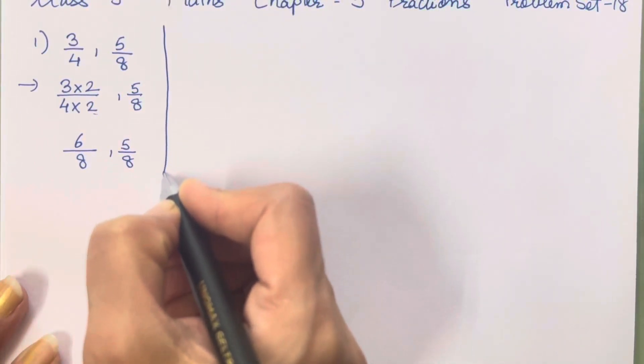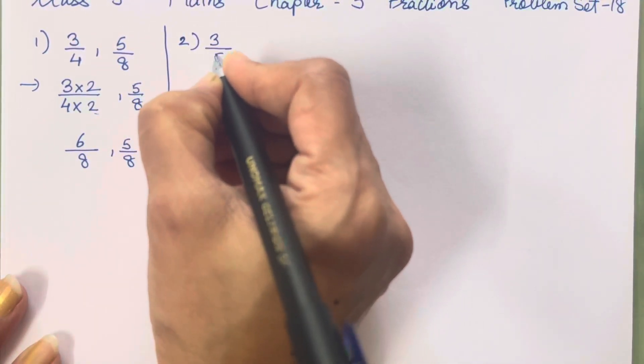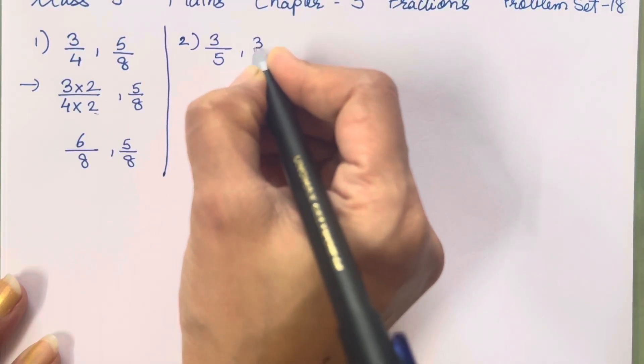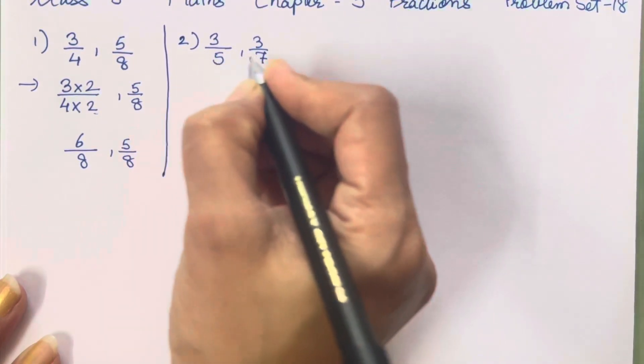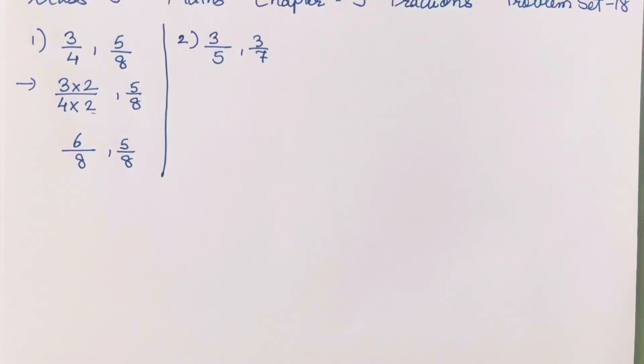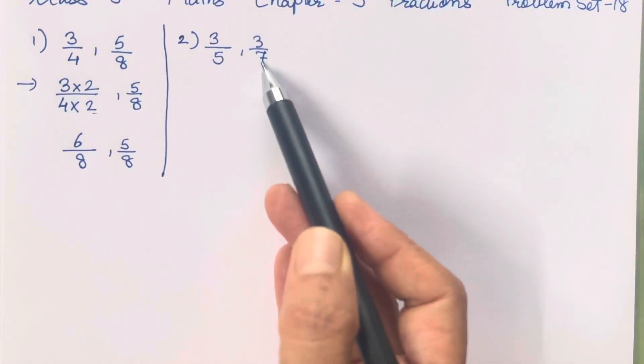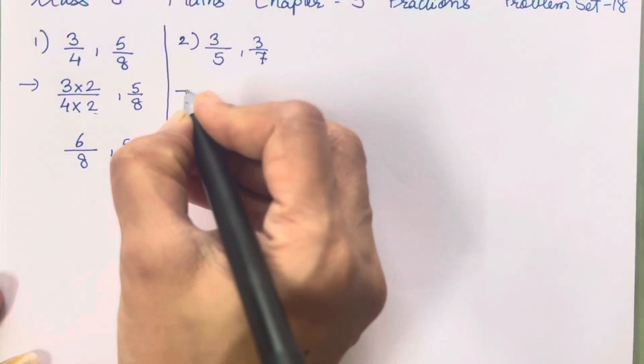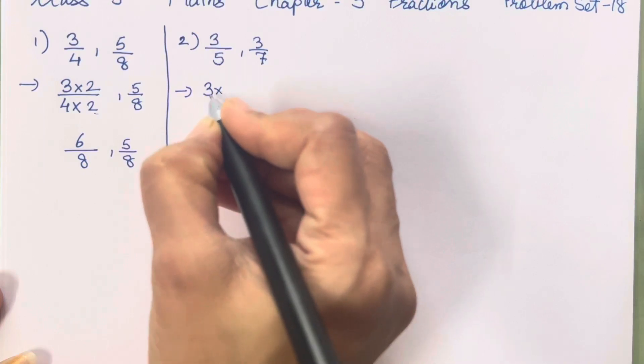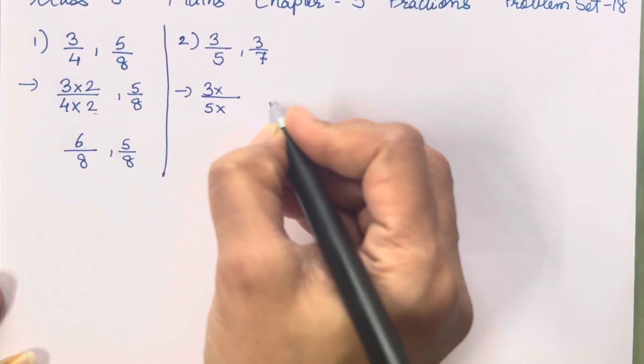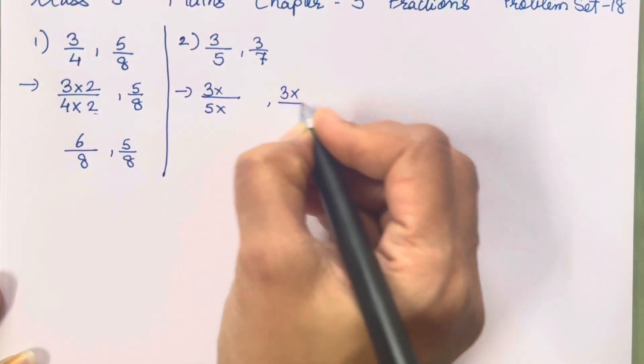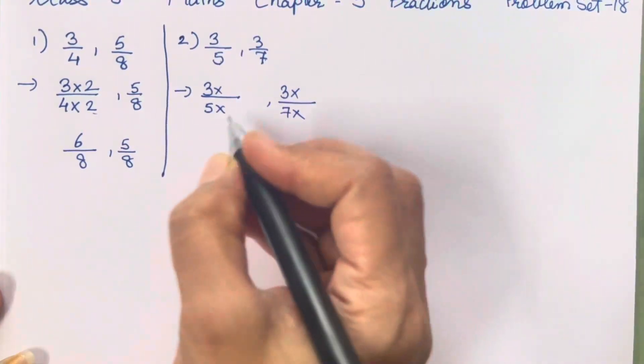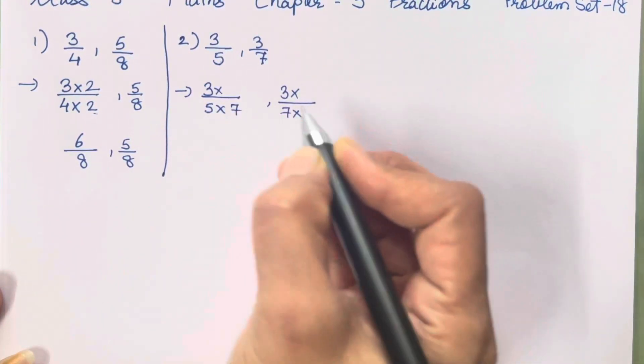Let's solve the second sum. 3 upon 5 and 3 upon 7. Now you will see both the numerators and denominators are different. So 5 ko 7 se multiply karna hai, 7 ko 5 se multiply karna hai. So how are you going to solve that? 3 into, 5 into, and here also 3 into and 7 into.